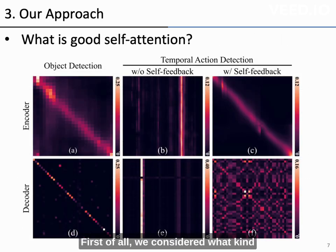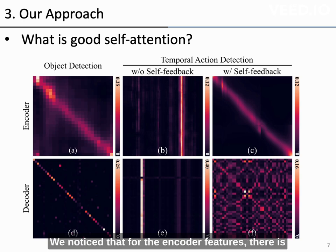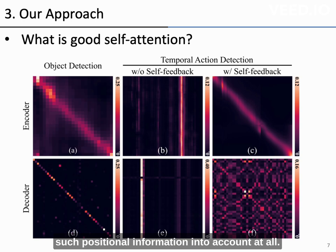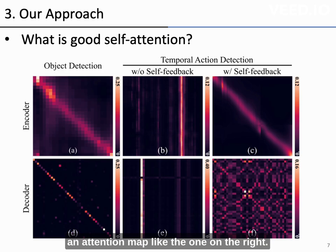First of all, we considered what kind of self-attention map would be ideal. To gain insights into this, we observed well-trained object detection self-attention maps. We noticed that for the encoder features, there is a strong correlation among nearby features, and the decoder queries also have high self-attention scores. In contrast, collapsed maps do not take such positional information into account at all. We aim to address this collapsed phenomenon and achieve an attention map like the one on the right.